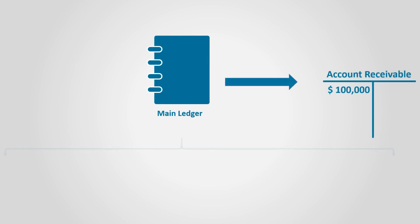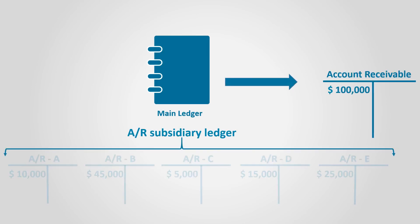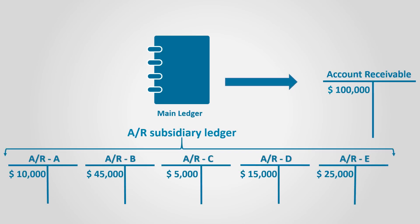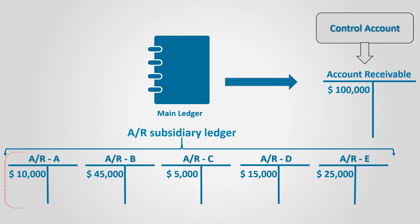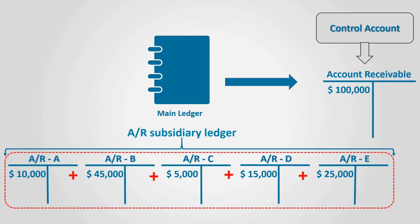If we look at the relationship between the account receivable subsidiary ledger and the account receivable account in the main or general ledger — which we also call the account receivable control account — we will find that the sum of the individual customer balances of the account receivable subsidiary ledger must be equal to the balance of the account receivable control account in the general ledger.